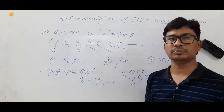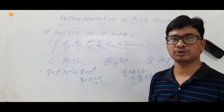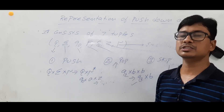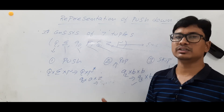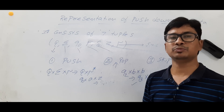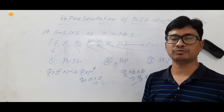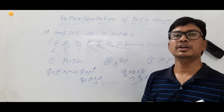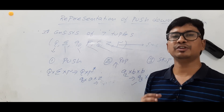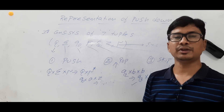I hope you have understood how to represent a pushdown automata, what the basic operations are — push, pop, and skip — and the difference between non-deterministic and deterministic pushdown automata, including which is more powerful. If you have any doubts feel free to ask; I will clear them within 24 hours. Thank you so much for watching.